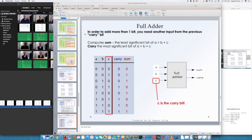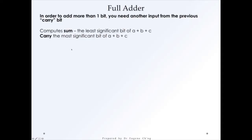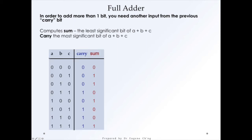The full adder computes the sum — the least significant bit — of A plus B plus C, and the carry — the most significant bit — of A plus B plus C. This is the complete truth table for the full adder. When it's 1 and 1 we have a carry; when there's only a 1 there's no carry; when there's a 2 there's a carry; and when there's a 3 there's both a carry and a sum. This is the complete behavior.